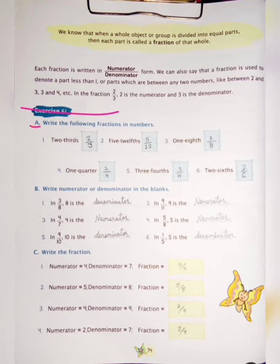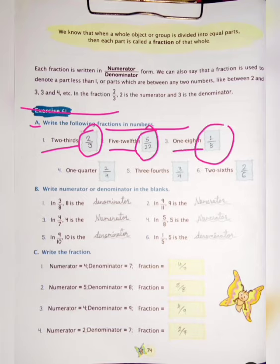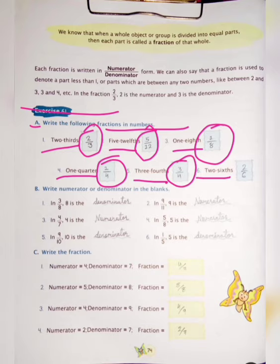Now let's see exercise 6.1, Question A: Write the following fractions in numerator/denominator form. 2 third — we will write 2 upon 3. 5 twelfths — 5 upon 12. 1 eighth — 1 upon 8. 1 quarter — 1 upon 4. 3 fourths — 3 upon 4. 2 sixth — 2 upon 6.